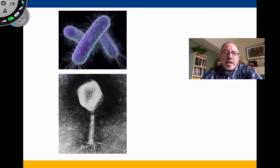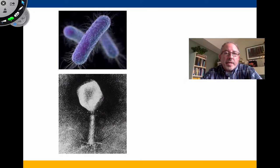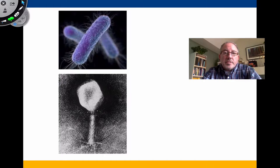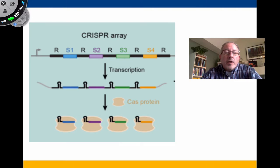Bacteriophages inject their DNA into bacteria. If bacteria are to survive, they can do that by taking a portion of the viral DNA, incorporating it into their own DNA, and then producing a guide RNA that will target a future virus infection. By using a nuclease called Cas9, they cut that DNA and render it harmless.